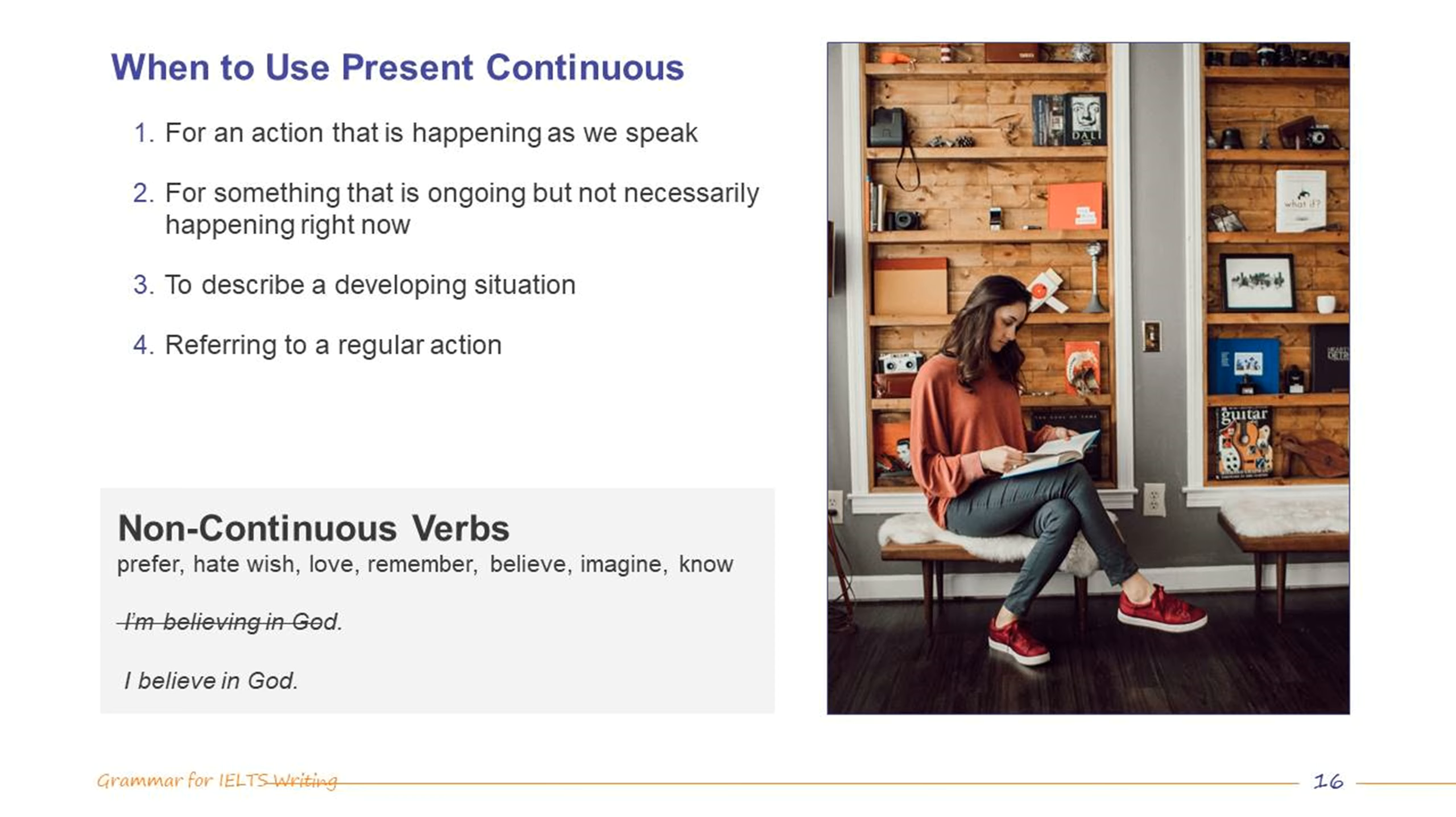There are many times when we could use the present continuous. Here are some of the common instances: for an action that is happening as we speak, for something that is ongoing but not necessarily happening right now, to describe a developing situation, referring to a regular action.